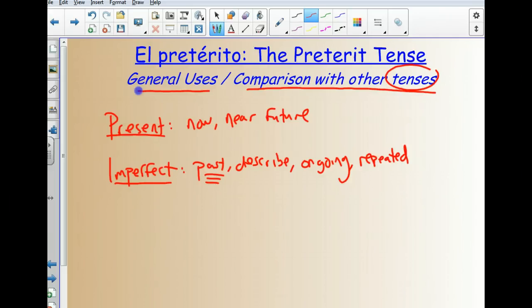Something that was done more than once. And finally, the next tense that we're going to discuss is the preterite tense. And the preterite tense is also a past tense, so in that sense it's similar to the imperfect, and it's often compared to the imperfect.